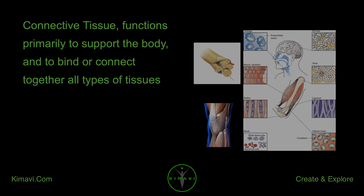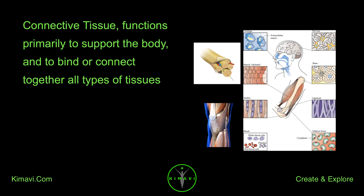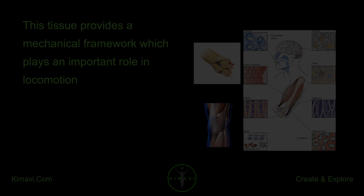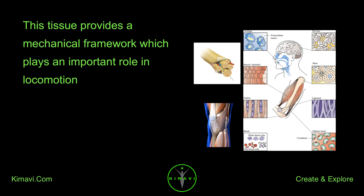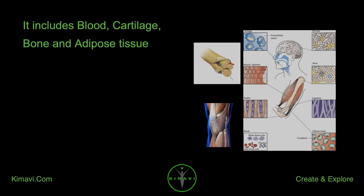Connective tissue functions primarily to support the body and to bind or connect together all types of tissues. This tissue provides a mechanical framework which plays an important role in locomotion. It includes blood, cartilage, bone, and adipose tissue.